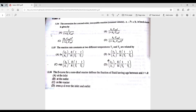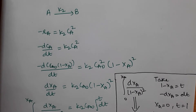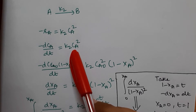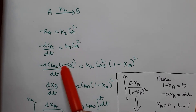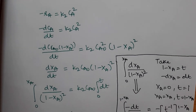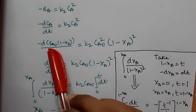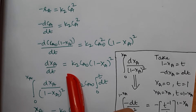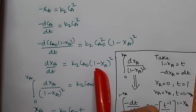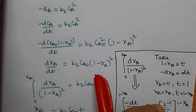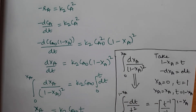Question 1.14: find the conversion in batch mode for a second-order irreversible reaction. The second-order rate equation is −rA = K₂·CA². We know CA = CA0(1 − XA), so we substitute that in. After simplification, CA0 terms cancel, and we take (1 − XA)² to the LHS and dT to the RHS, integrating with limits 0 to XA and 0 to t.